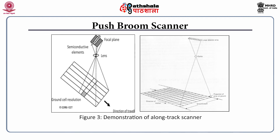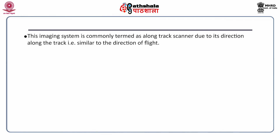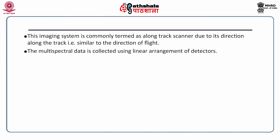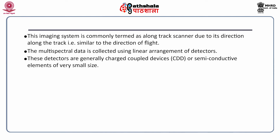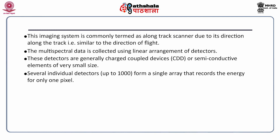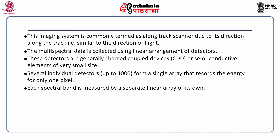Figure 3 demonstrates an along-track scanner where semi-conductive elements all focus at the lens and the ground cell resolution corresponds to one pixel on the ground. This imaging system is commonly termed as an along-track scanner due to its scanning direction along the track, which is similar to the direction of flight. Multispectral data in this scanner is collected using a linear arrangement of detectors, generally Charge-Coupled Devices (CCDs) or semi-conductive elements of very small size. Several individual detectors — up to maybe 1,000 — form a single array that records the energy for only one pixel.